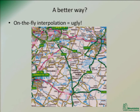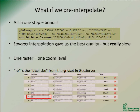Because these are tiles we know they're always going to be shown at a fixed scale, so there is a better way: we pre-interpolate. We create a raster for each of the zoom levels — there are actually about 11 zoom levels for the rasters — and each one gets a separate raster layer that will always look very good when you zoom to it at that level.